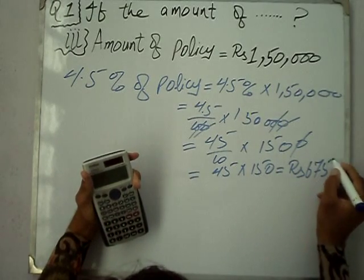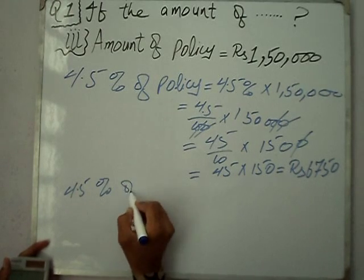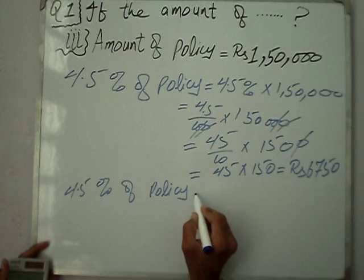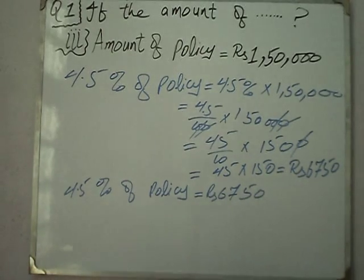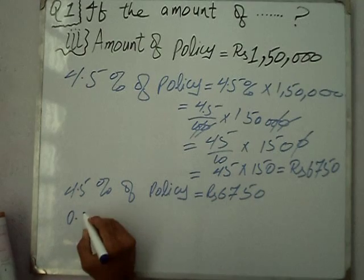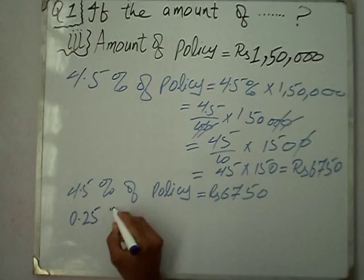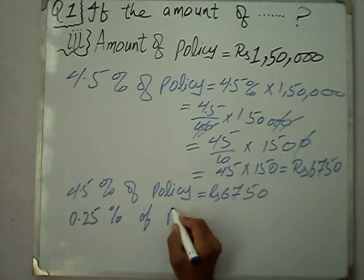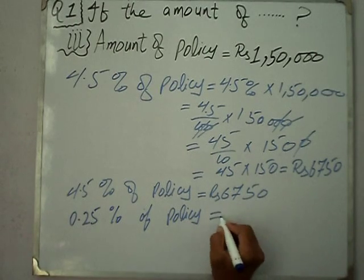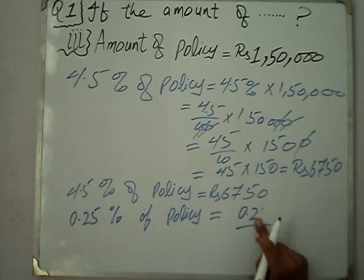So 4.5% of the policy amount comes to ₹6,750. Now we need to find 0.25% of the policy amount. If it is more than ₹200, we will take ₹200 as the maximum limit. So 0.25% of policy amount.